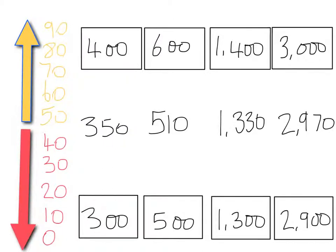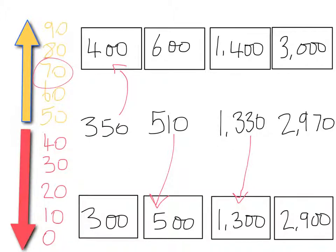Here are our multiples of a hundred that all of the numbers lie between. Three hundred and fifty — the fifty shows we should round upwards. The ten of five hundred and ten tells us to round downwards. One thousand three hundred and thirty: the thirty tells us to round down to one thousand three hundred. Two thousand nine hundred and seventy lies between two thousand nine hundred and three thousand. The seventy tells us to round upwards to three thousand. So two thousand nine hundred and seventy is three thousand to the nearest hundred.